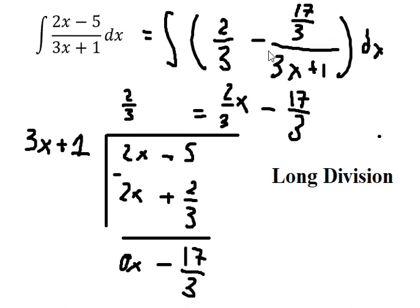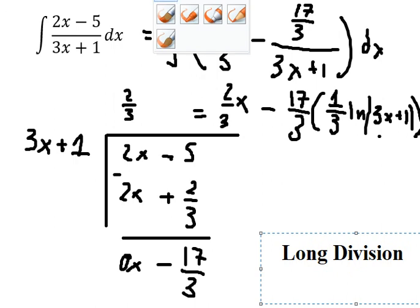Because we have 3 next to x, we have 1/3 times the natural log of the absolute value of 3x plus 1, and I will add the constant C.